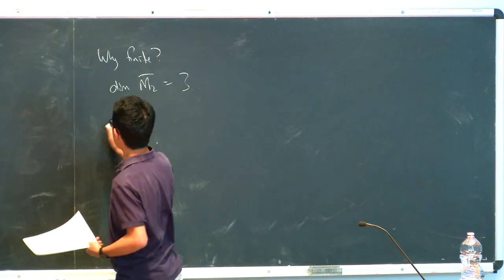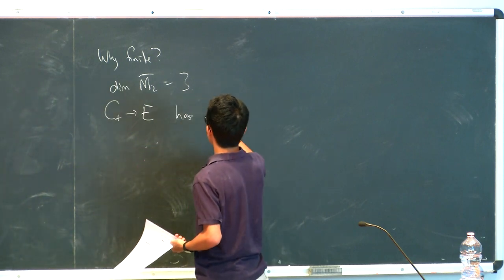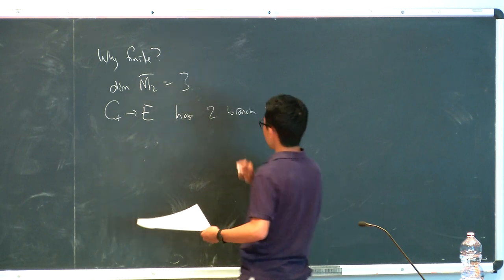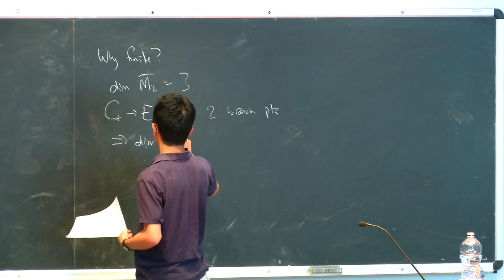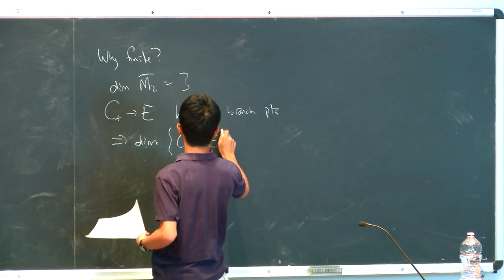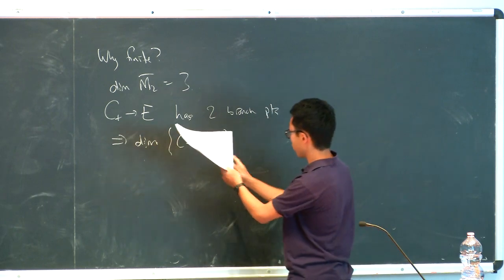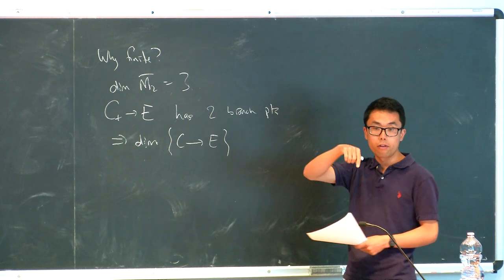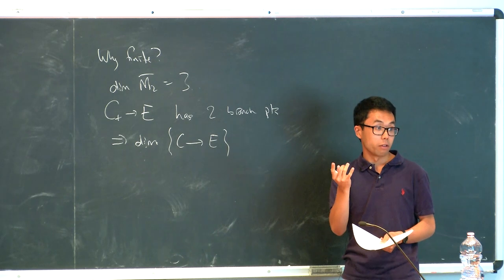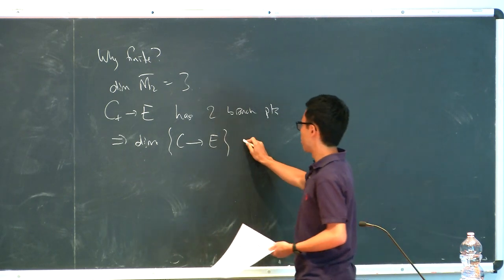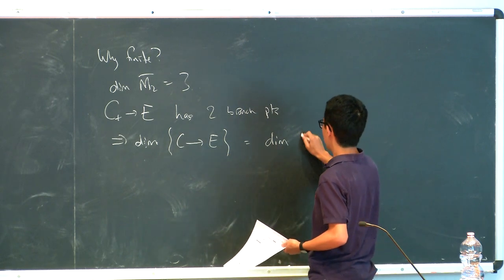Well, so such a map will have two branch points by Riemann-Hurwitz. And so if I think about the family of covers, so if I think about just the family of all covers of a genus 2 curve mapping to a genus 1 curve of degree D. So it's a standard fact. I can turn this around and say, if I specify the base curve and the two branch points, then I get finitely many covers after specifying the monodromy.